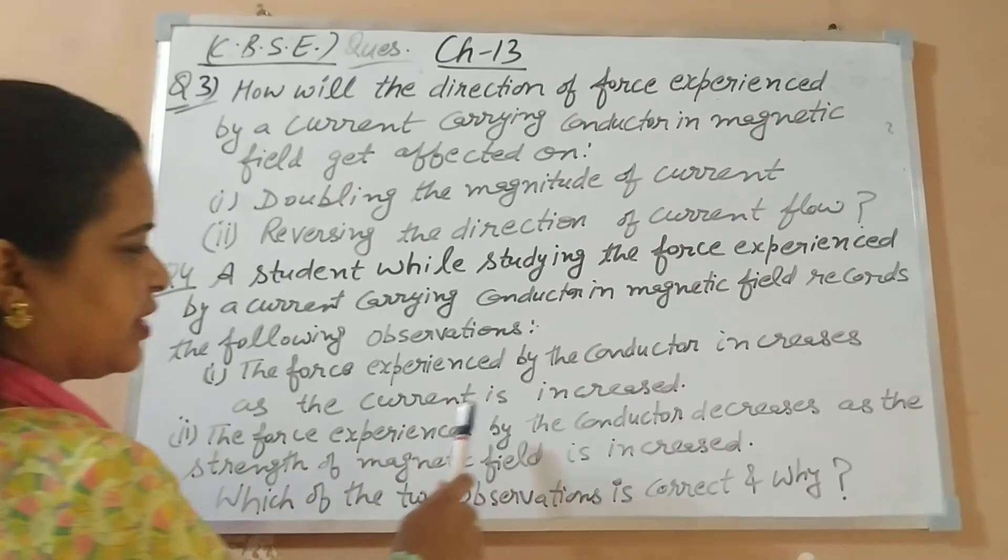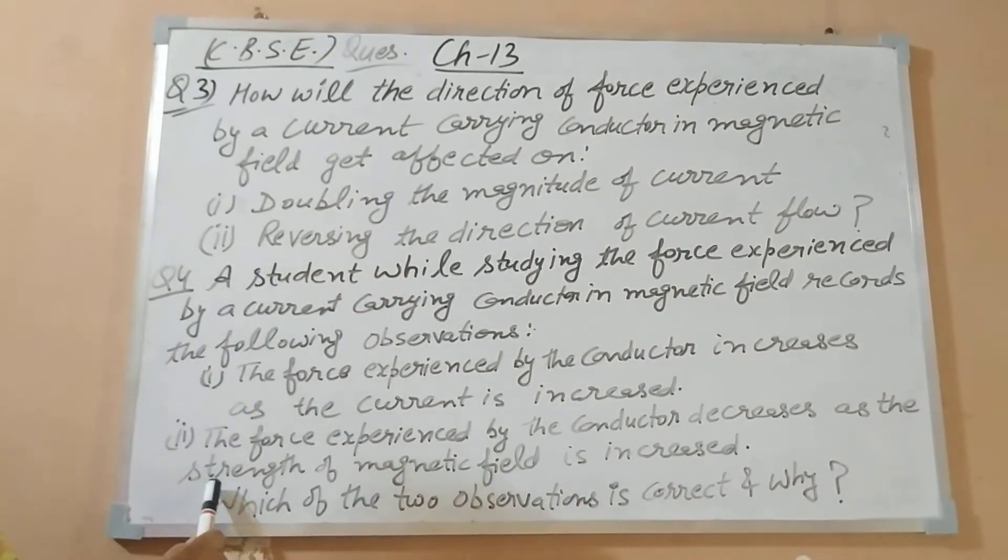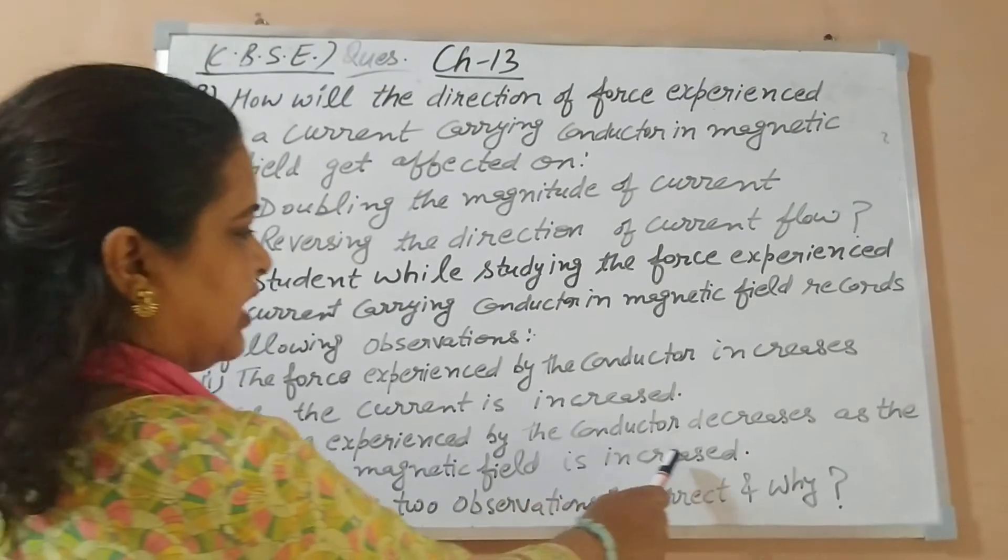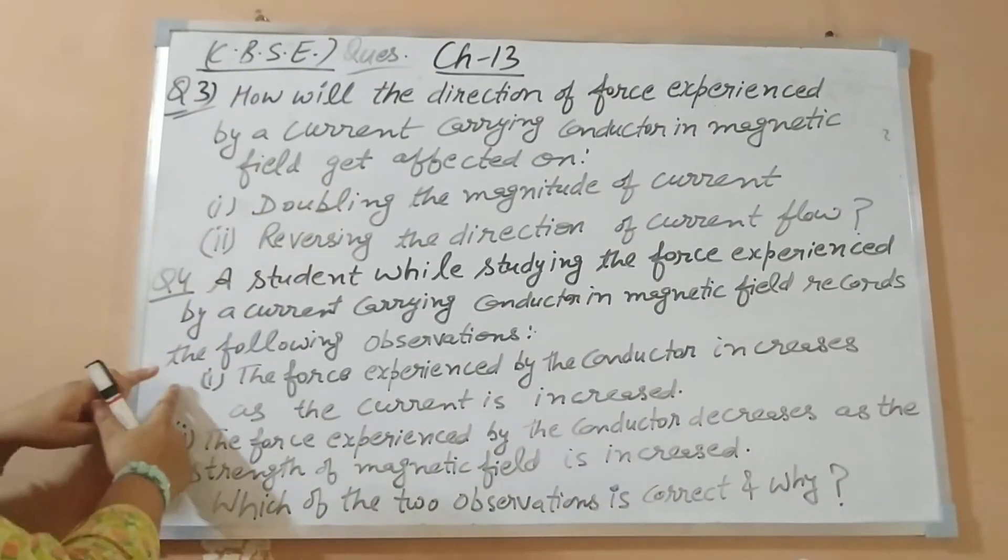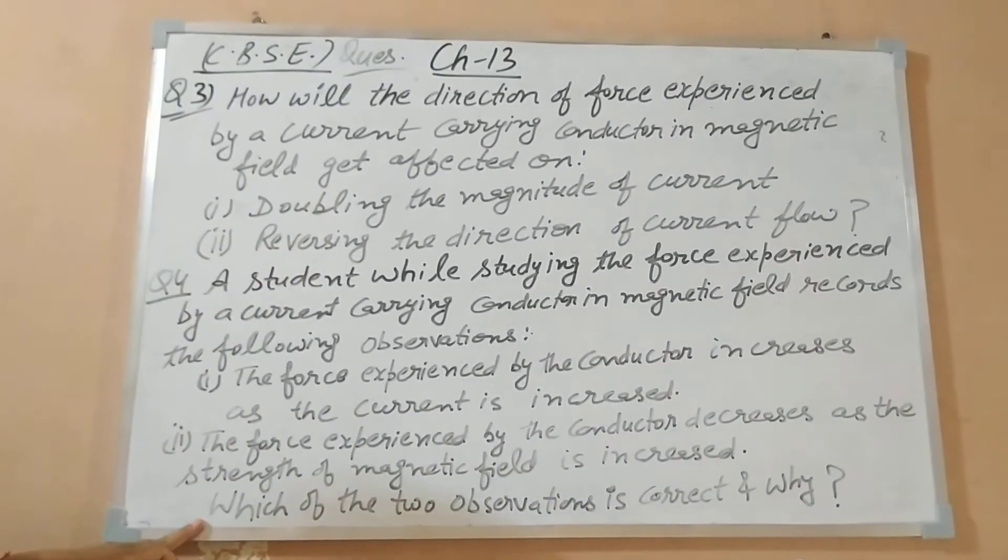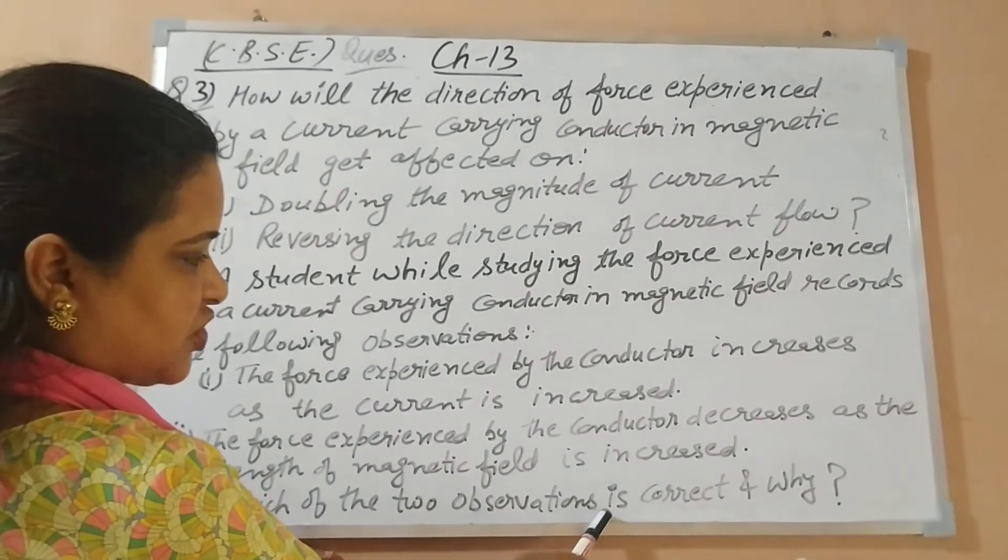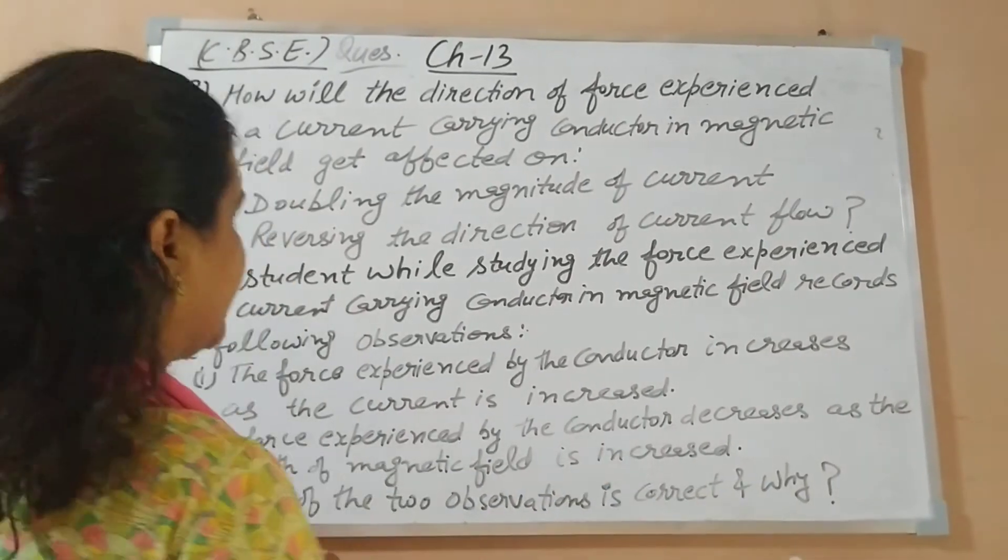Second observation given in the question is: the force experienced by the conductor decreases as the strength of the magnetic field is increased. Now, based on these two observations, what is the question? Which of the two observations is correct and why?